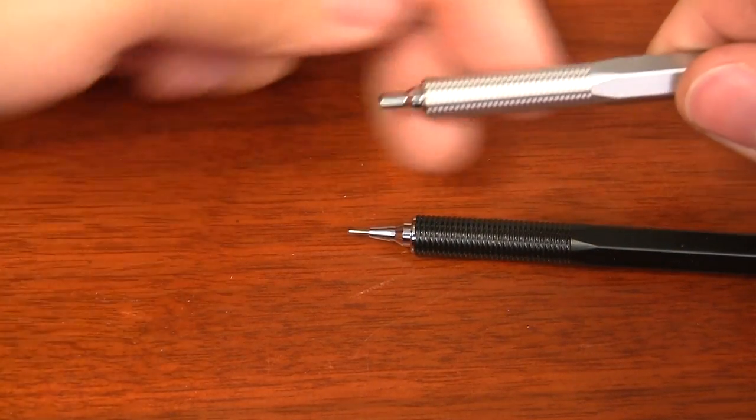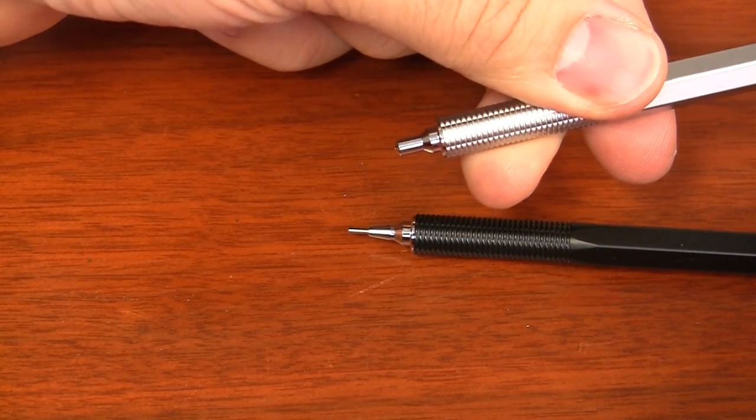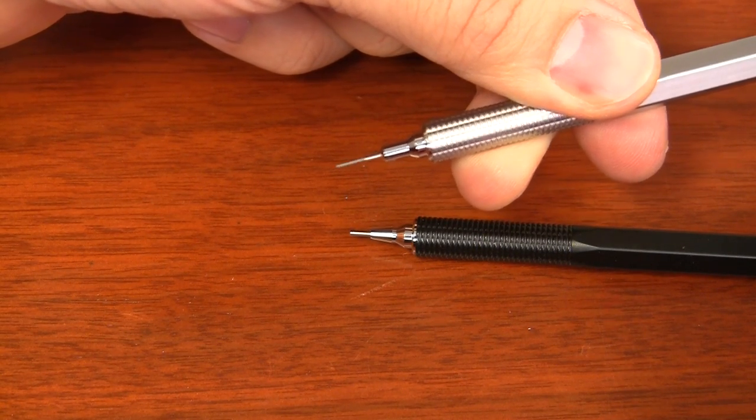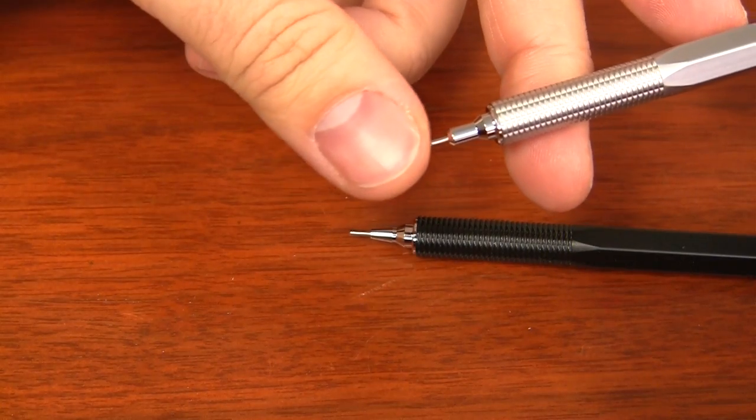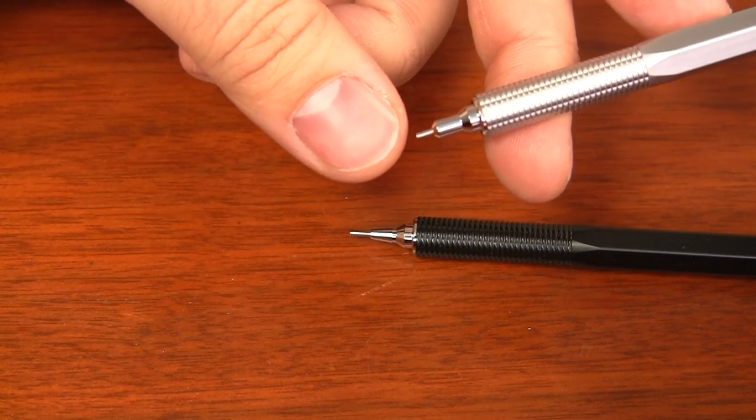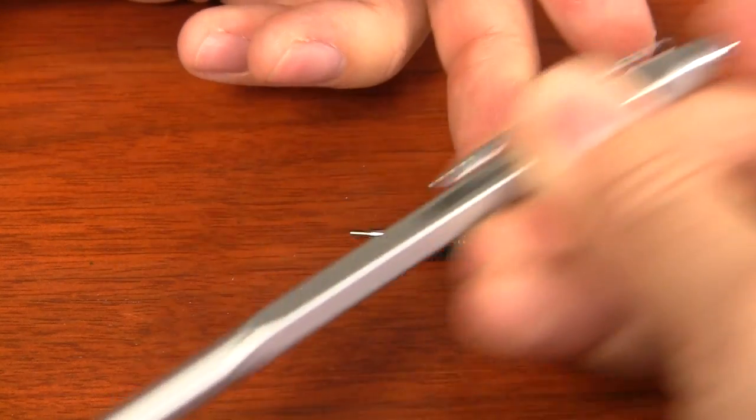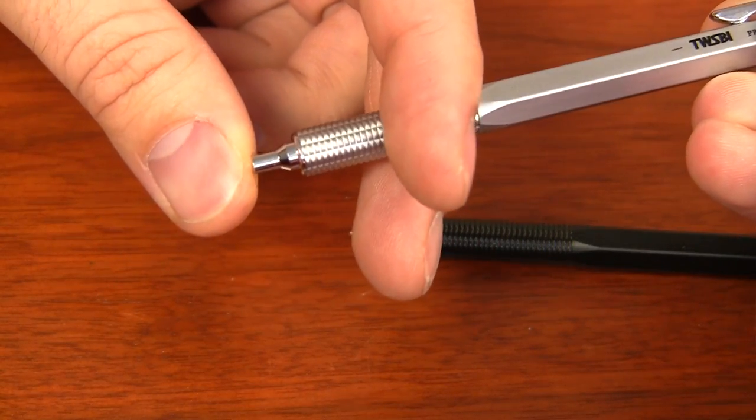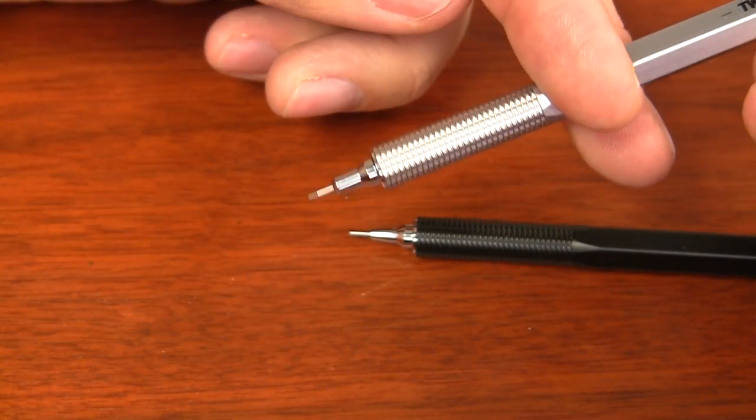The retractable one, as I press on the back, that tip actually comes out with the pencil lead. And then I can either choose to leave it sticking out like that, or if I hold down the back of it as I'm pushing this down, it will actually retract back into it. It won't do it automatically.